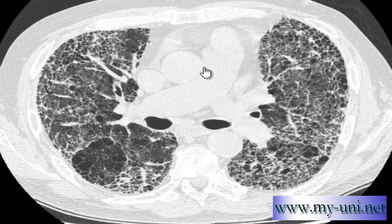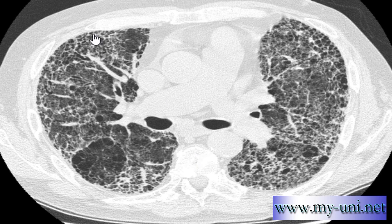One of the signs is septal thickening. This axial CT scan image shows severe parenchymal destruction with inter- and intralobular prominent septal thickening. An interlobular septal line should not be more than 0.5 millimeters in diameter. There are also cysts creating a honeycombing pattern, as well as ground-glass infiltrates.